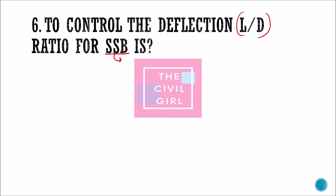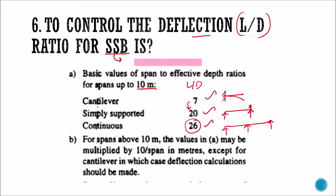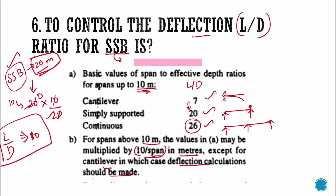To control deflection, the L/d ratio for beams as per IS 456 is: for cantilever — 7; for simply supported beam — 20; for continuous beam — 26. These apply for spans up to 10 m. For spans above 10 m, the value should be multiplied by 10 divided by the span in meters, except for cantilevers where deflection calculation should be made separately. For example, a simply supported beam of 20 m span: 20 × (10/20) = 10, so the L/d ratio is restricted to 10.